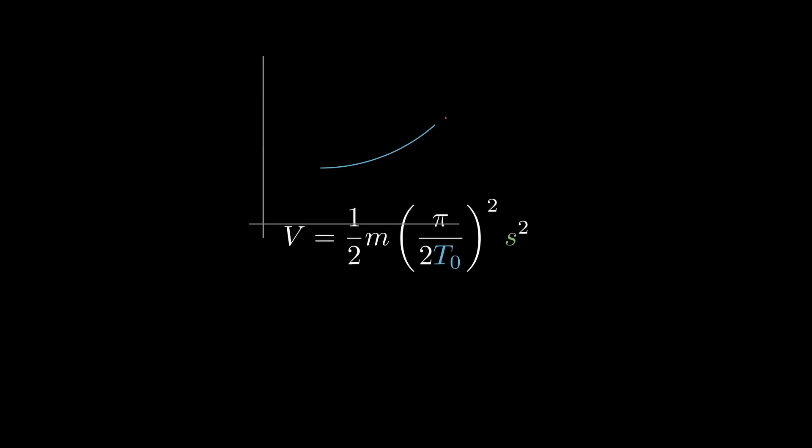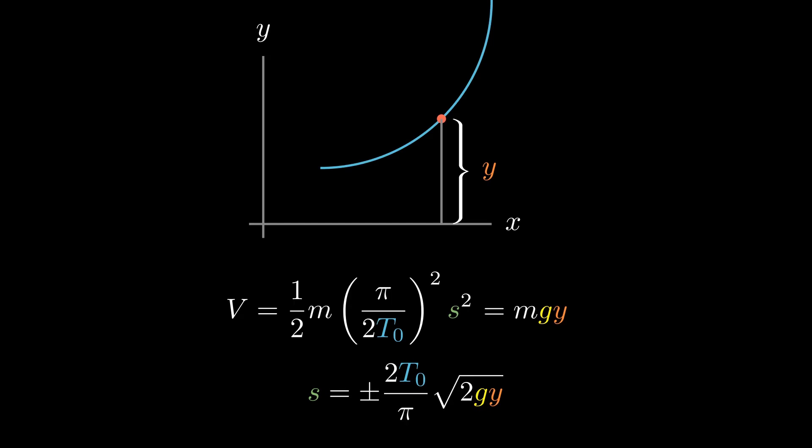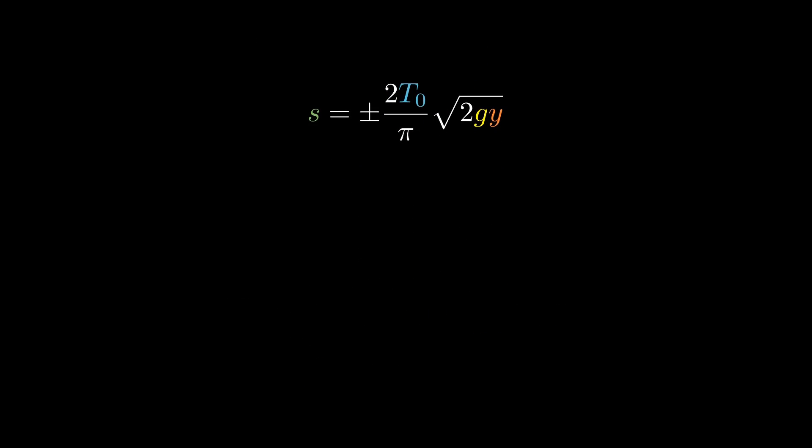But for an arbitrary curve, this potential energy comes from the height from which the sliding particle is located at any given instant. Equating the two, we finally get the condition to be satisfied by any tautochrone curve.